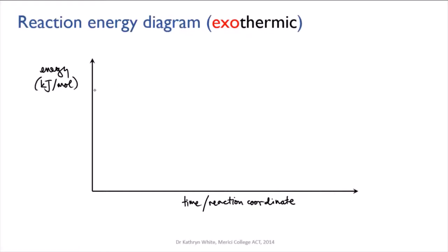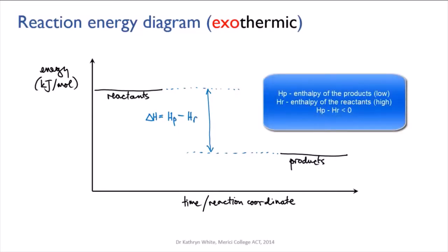If this is an exothermic reaction then our reactants at the beginning of the reaction have more energy than the products at the end of the reaction. The difference between those two energies is delta H, the change in enthalpy. You can see this is going from high value to a low value so the change is a negative one and that's what shows that it's exothermic.